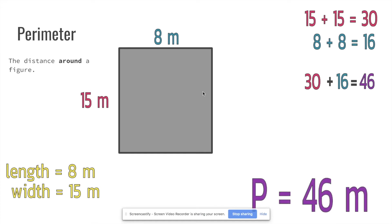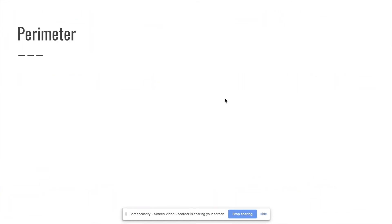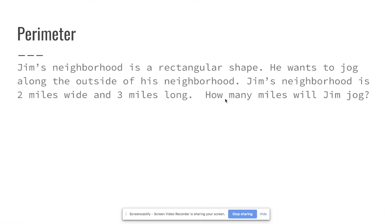The perimeter is 46 meters. Now let's try a word problem: Jim's neighborhood is a rectangular shape and he wants to jog along the outside. His neighborhood is two miles wide and three miles long. How many miles will Jim jog?